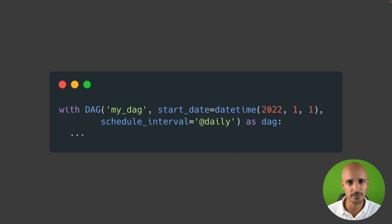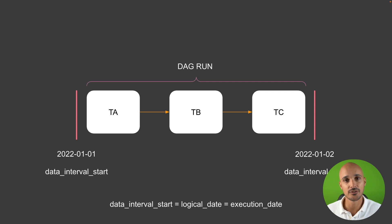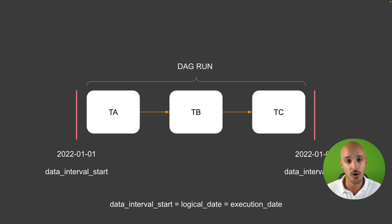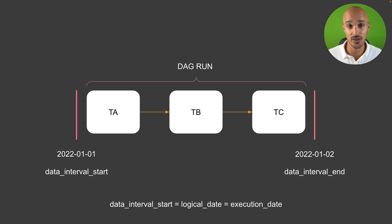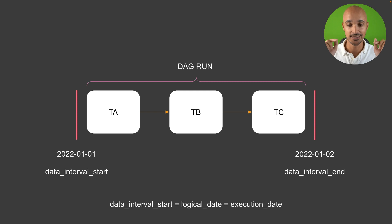Just before I was talking about DAG runs — the non-triggered DAG runs that get automatically triggered. What is exactly a DAG run? It's nothing more than an instance of your DAG. So when the scheduler triggers your DAG, you obtain a DAG run for a specific period of time, with a data interval start and a data interval end. That's what you can see here.